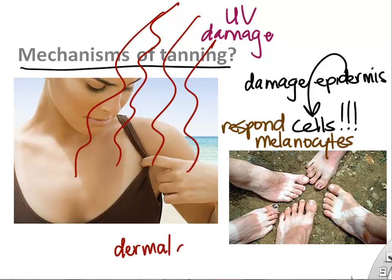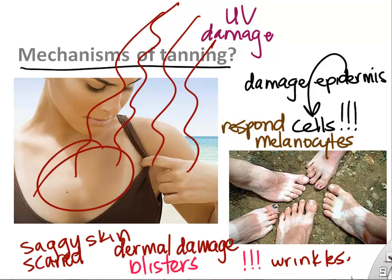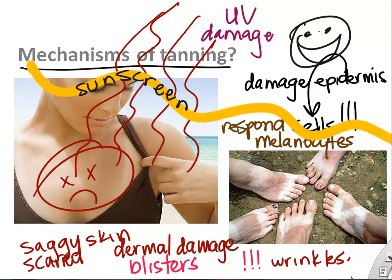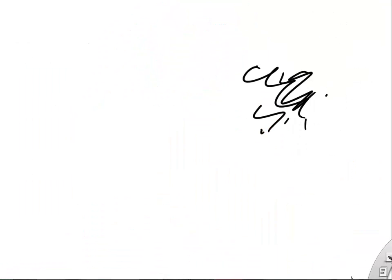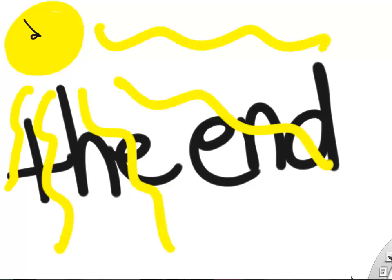Dermal damage can also occur below the epidermis. You can get blisters, and if you start damaging the dermis you damage the collagen and elastin — you start to get saggy, scarred, and wrinkled skin, which you can see on the chest of people who've been in the sun too much. The way to protect yourself is sunscreen, which blocks UV rays from reaching your epidermis and dermis. That's all for this preview video; the rest we'll cover in class.